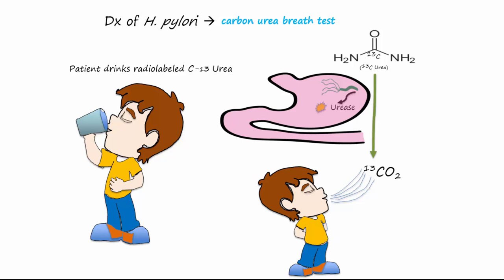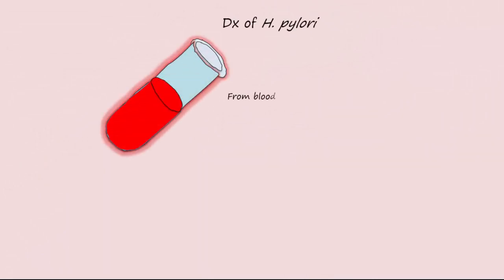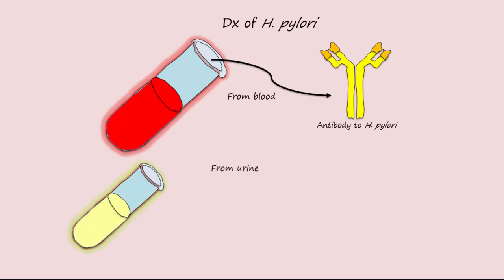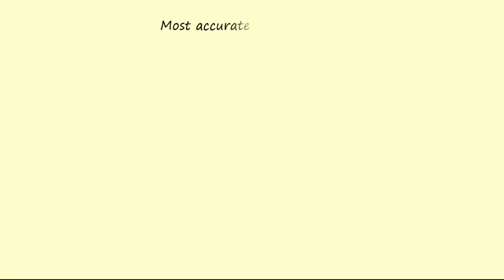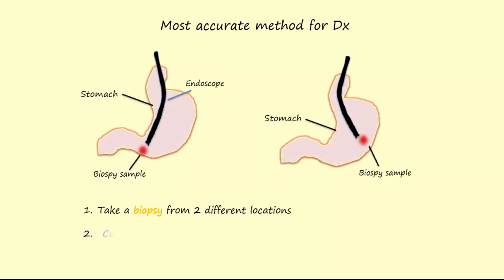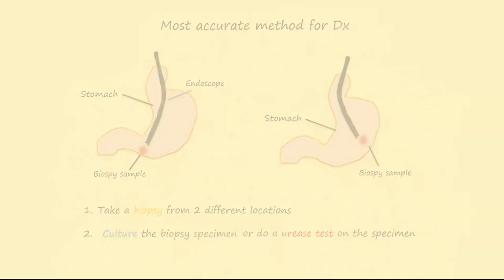Other diagnostic methods include measuring the blood for antibodies against H. pylori. Also, the urine or stool can be tested for H. pylori antigens. The most accurate diagnostic method is to take a biopsy from two sites and then culture the potential microbes or do a urease test on the biopsy specimen.